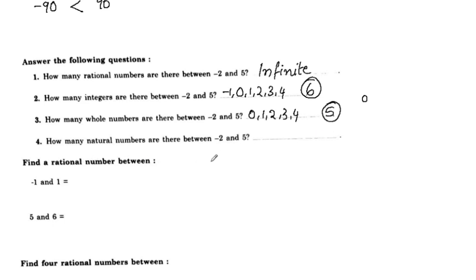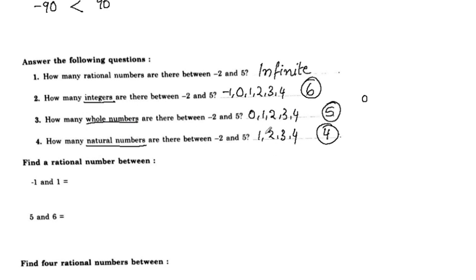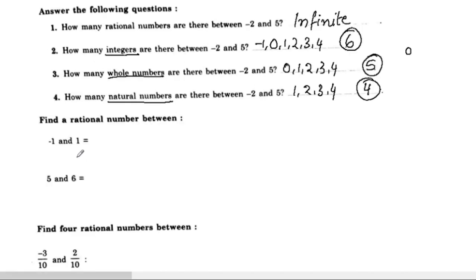How many natural numbers are there between negative 2 and 5? The rational number 0 by 1 follows the p by q formula and is a rational number.